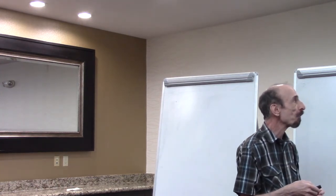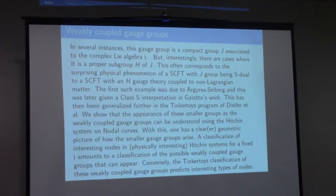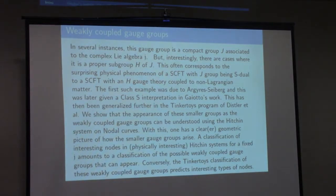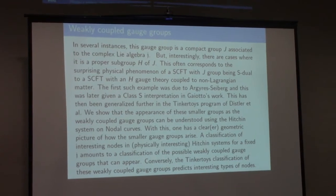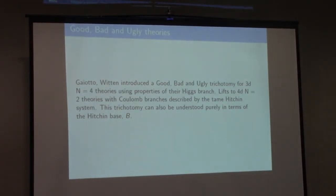We show that the appearance of these smaller groups as the weakly coupled gauge groups can be understood using the Hitchin system on nodal curves. That's going to be the main mathematical contribution of the talk. With this, one has a clear dramatic picture of how the smaller gauge groups arise. Classification of interesting nodes and physically interesting Hitchin systems for fixed J amounts to classification of the possible weakly coupled gauge groups that can appear. We do this subject to some reasonability constraints from physics. Conversely, the tinkertoy classification gives you examples that you can work to realize using Hitchin systems.